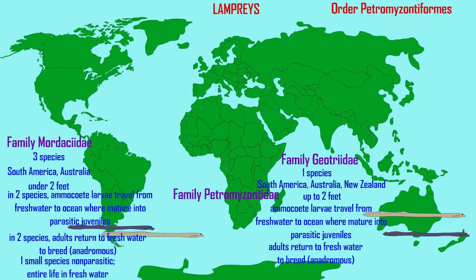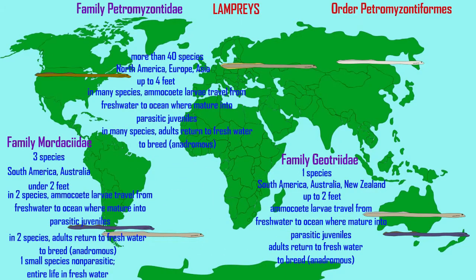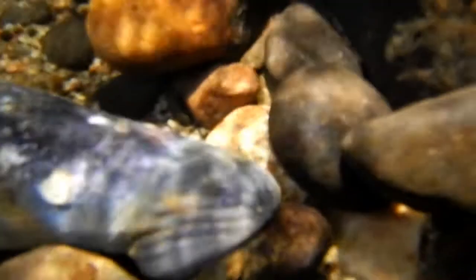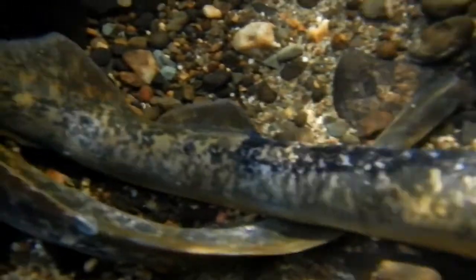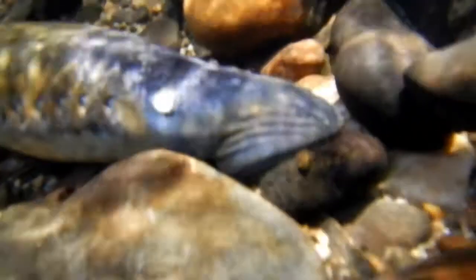The majority of lampreys are the northern lampreys of the family Petromyzantidae. They live in North America, Europe, and Asia, and the sea lamprey can reach up to four feet in length. Some species are not parasitic and spend their entire life in fresh water, while others travel to the ocean and prey on fish there, only to return to fresh water to breed. This family has the greatest number of chromosomes known in vertebrates — between 164 and 174 chromosomes per nucleus.